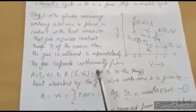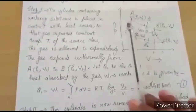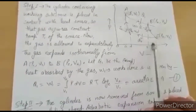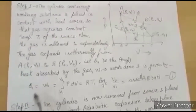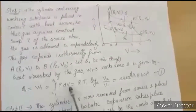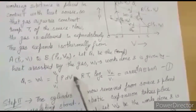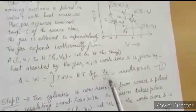The expansion is isothermal — the working substance attains the same temperature as the source. Expansion takes place from point A to point B; volume increases and pressure decreases. The work done equals Q1, so W1 = Q1 = RT1 log(V2/V1), which is the area under the A-B curve. This is equation number 1.